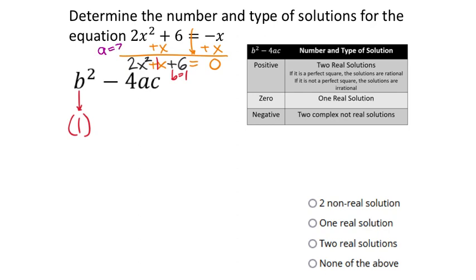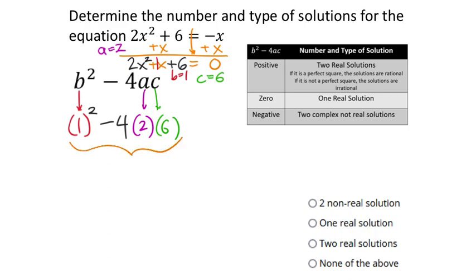Now let's take another equation and find the discriminant. After rearranging to standard form, the b value is 1. Since b is 1 — pretty small — I'm expecting the discriminant to probably be negative, meaning two non-real solutions. The a value is 2 and c is positive 6. So it's 1 squared minus 4 times 2 times 6, which gives negative 47.